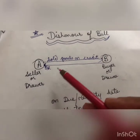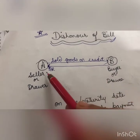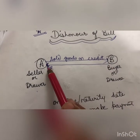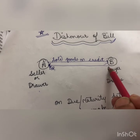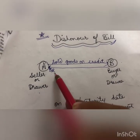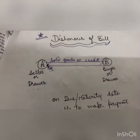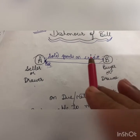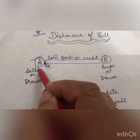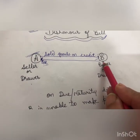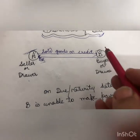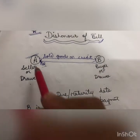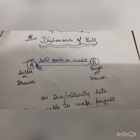For example: A sold goods to B. A is the seller and also the drawer; B is the buyer and the drawee. A draws a bill on B; B signs and accepts the bill and gives it back to A. So at present, A is the holder of the bill. On the due date, B refuses to make payment or is unable to make payment to A. This is called dishonor of the bill.